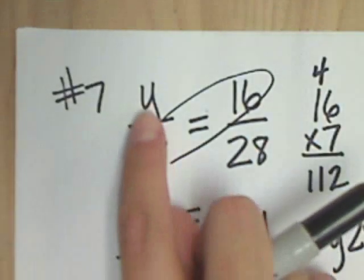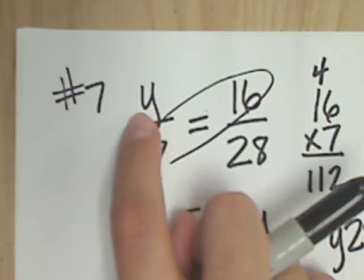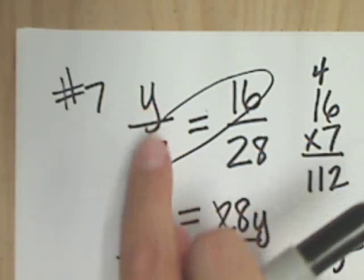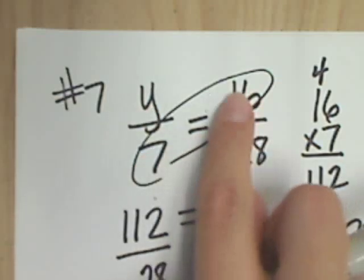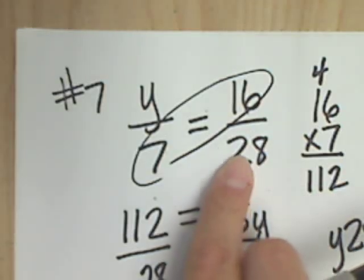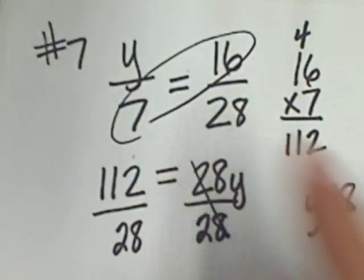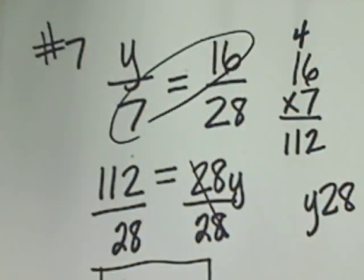And that's telling me that if I put a 4 up here instead of the y, I'd have 4 over 7 equal to 16 over 28, and they would be exactly the same. You're right. Good. Good point.